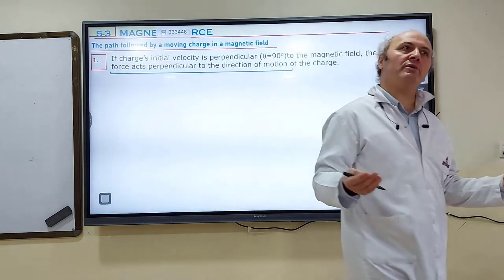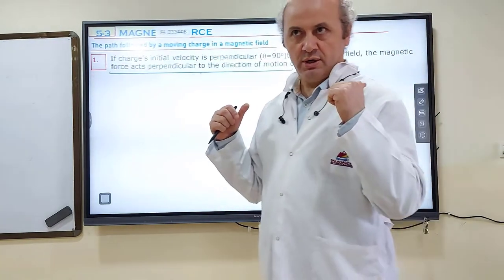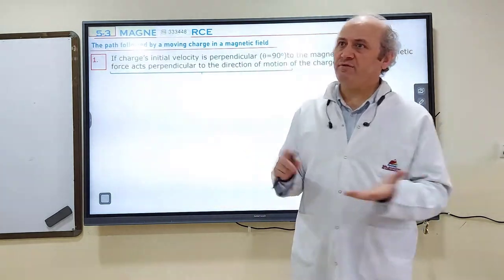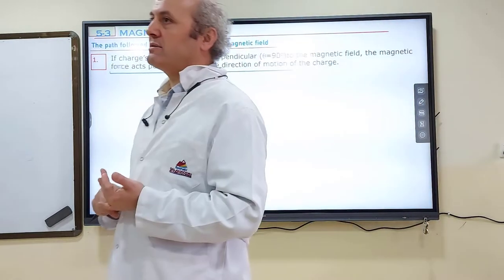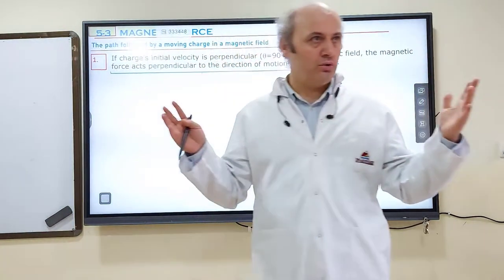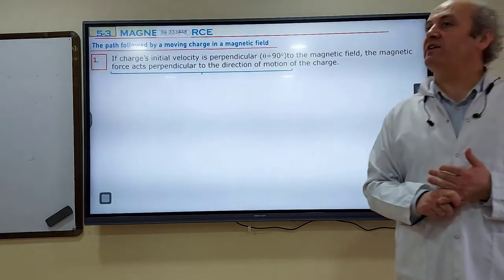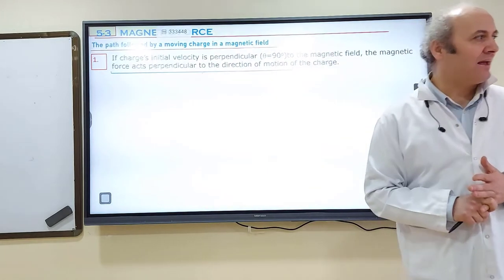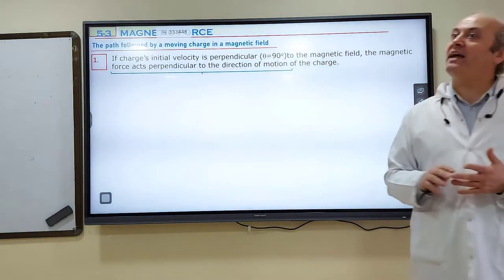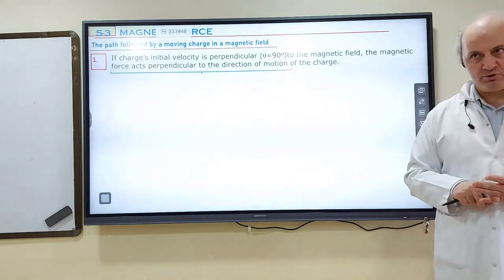How can you slow down an object? By a force which is in the opposite direction of the motion. But magnetic force is neither of these, because magnetic force always acts perpendicular to the direction of motion. This is the rule. Magnetic force acting on a charge in a magnetic field always acts perpendicular to the direction of motion, which means it cannot speed up or slow down an object.